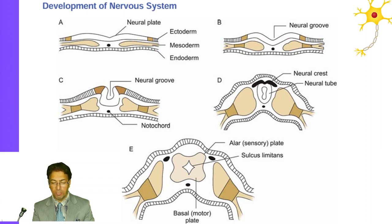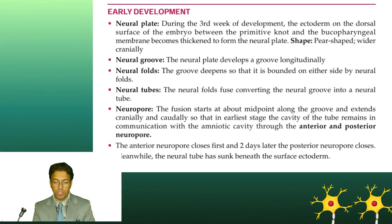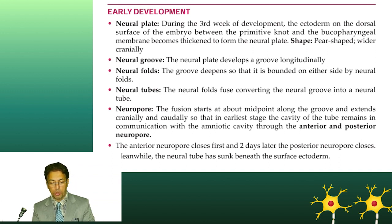As far as the development of the nervous system is concerned, in this figure we can see the neural plate, the neural groove, the neural crest, and the neural tube, as well as the further differentiation of the neural tube. Early development of the neural system starts in the third week of intra-embryonic life. The neural plate is formed, then the neural groove deepens further, and the neural folds fuse together, converting the neural groove into the neural tube.